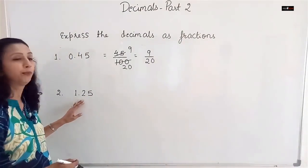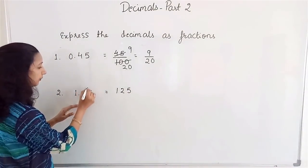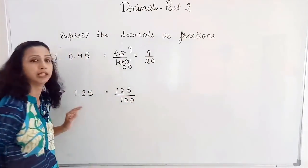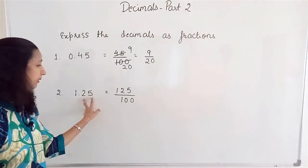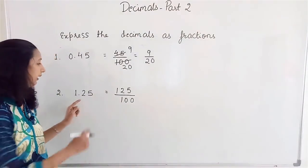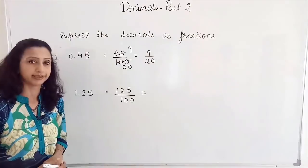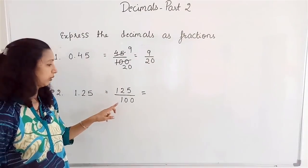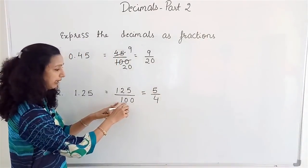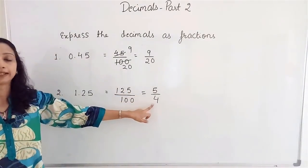For 1.25: removing the decimal point gives 125. There are two decimal places, so the denominator is 100. 125 by 100 is not in lowest terms — both are multiples of 25. 25 fives are 125 and 25 fours are 100, so the fraction simplifies to 5 by 4.